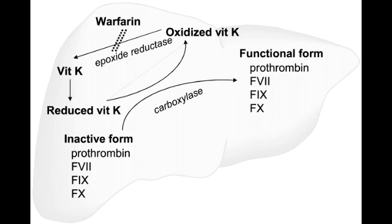What enzyme helps the conversion of oxidized vitamin K to reduced vitamin K? The enzyme that helps the conversion of oxidized vitamin K to reduced vitamin K is epoxide reductase. Vitamin K is important because it serves as a cofactor in the conversion of precursor clotting factors to their mature form, such as clotting factors 2, 7, 9, and 10, as well as protein C and S.